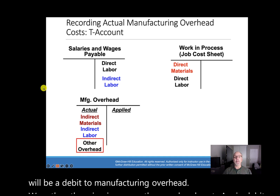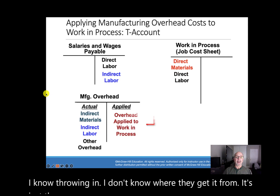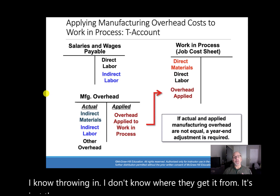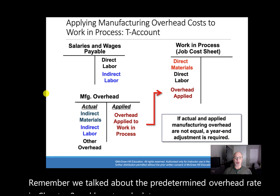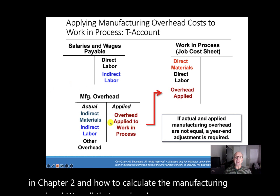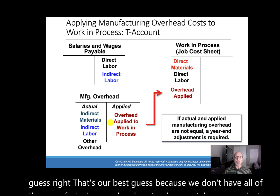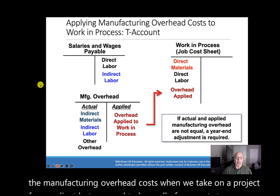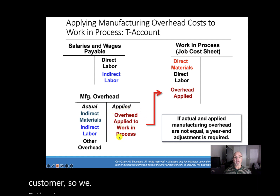We also add other overhead costs as a debit to manufacturing overhead. Remember, we talked about the predetermined overhead rate in Chapter 2 — we call that overhead applied because it's our best guess. We don't have all manufacturing overhead costs when we take on a project, but we need all costs to calculate a price to charge the customer. So we estimate or apply manufacturing overhead using the POHR formula. Now that we have all of our costs in work in process, we're ready to go.